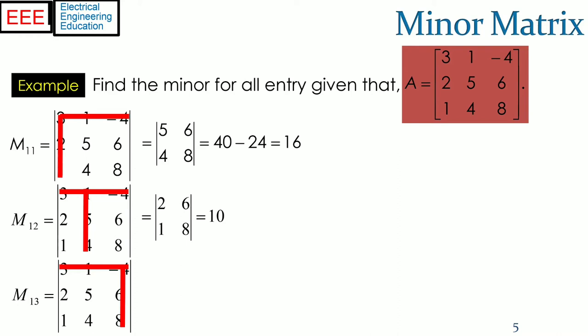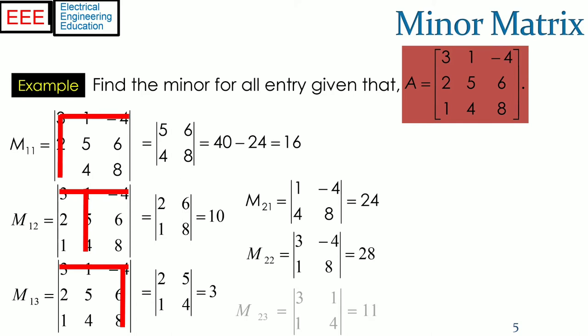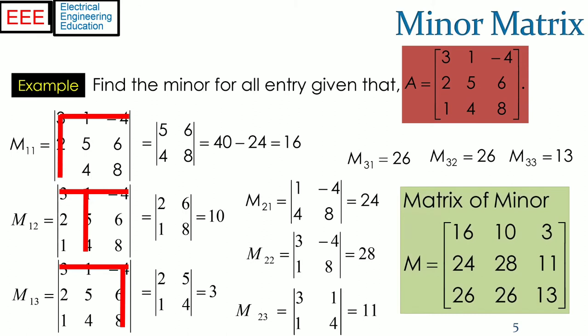For M_13, the first row and third column is deleted, and the determinant is 3. The determinants for M_21, M_22, M_23 are shown as well as the corresponding remaining minor elements. Similarly, the minors for the third row are shown. Finally, the matrix of minor is formed.